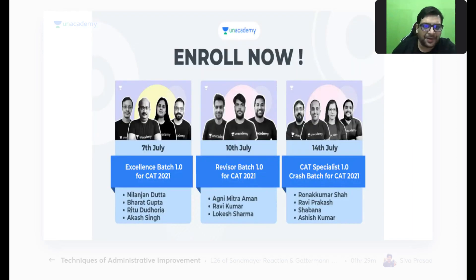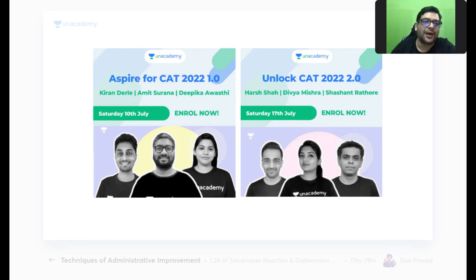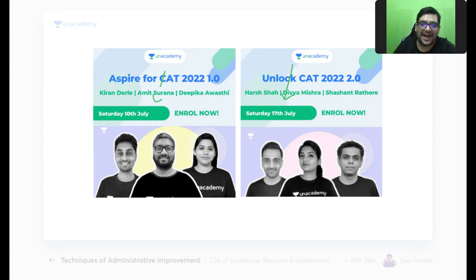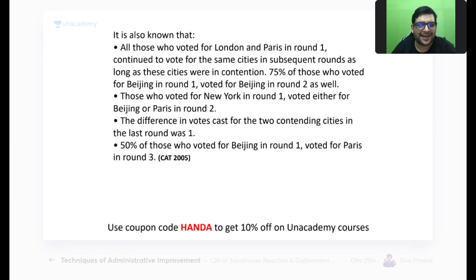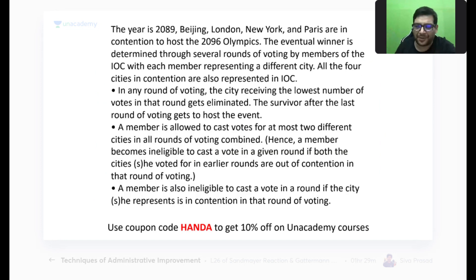Multiple batches are starting. For those beginning preparation, the 7th or 10th July batch is better than the 14th July crash course. Use coupon code HANDA when enrolling. For CAT 2022 students, look at the specific batches starting for that year. There's one more set I had for today — I'll save it for episode 3. Looking at it quickly: there's a table with some missing data, conditions, and mostly direct questions — looks like a good set to attempt.